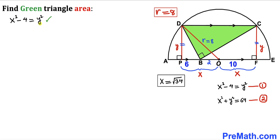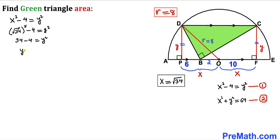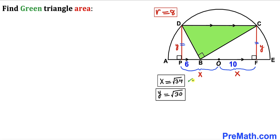Now focusing on equation 1: x squared minus 4 equals y squared. Substituting x equals square root of 34: (square root of 34) squared minus 4 equals y squared. The square and square root cancel, giving 34 minus 4 equals y squared, so y squared equals 30. Taking square roots on both sides, y equals the square root of 30. So x equals square root of 34 and y equals square root of 30.